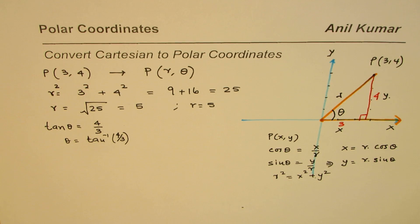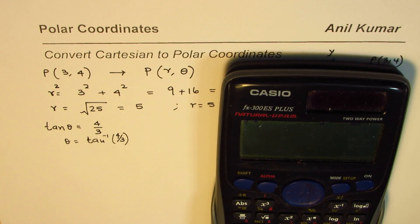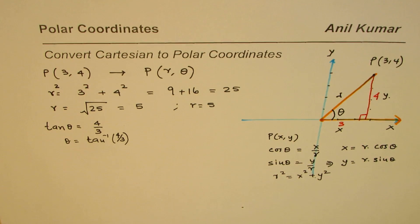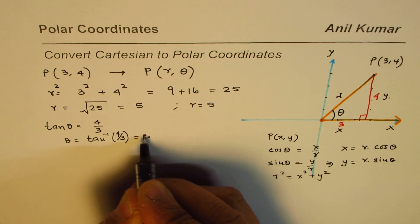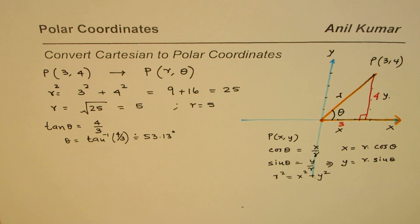At times, you can use calculator to find this approximate value. Say inverse, tan inverse, 4 divided by 3 equals to, you get 53.130. Let's say this much degrees approximately.